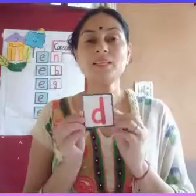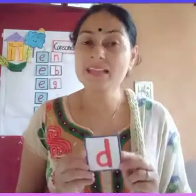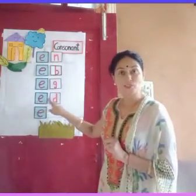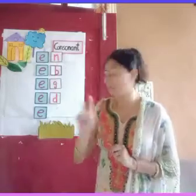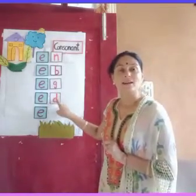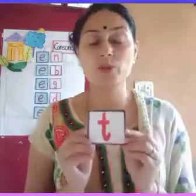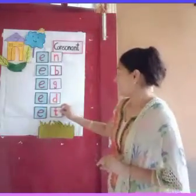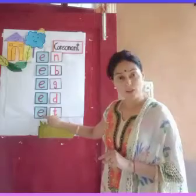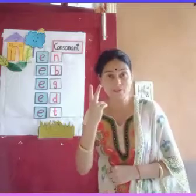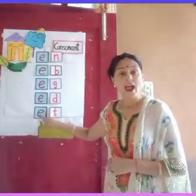The next consonant is D. This is D, and D says 'd'. Vowel E and consonant D join together to make the two-letter word 'ed'. And the last consonant I am going to take is T. T says 't'. Consonant T and vowel E join together and make the two-letter word 'et'.